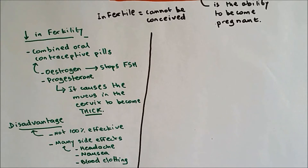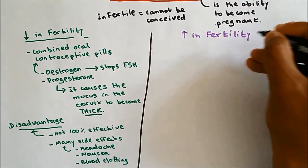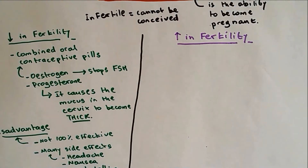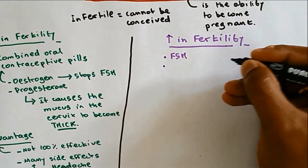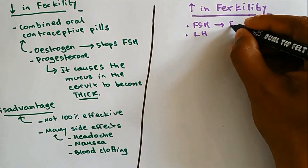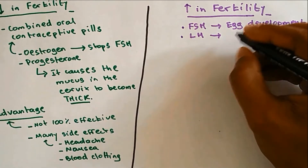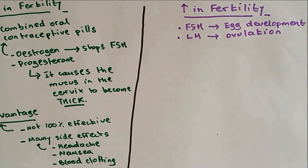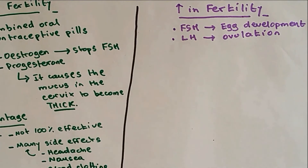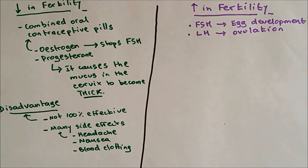Let's take a look at increasing fertility. The two hormones used to increase fertility are FSH and LH. FSH causes egg development and LH causes ovulation. Women who want to increase their fertility are injected with FSH and LH. This is the first method, and if it doesn't work out, then IVF is done.